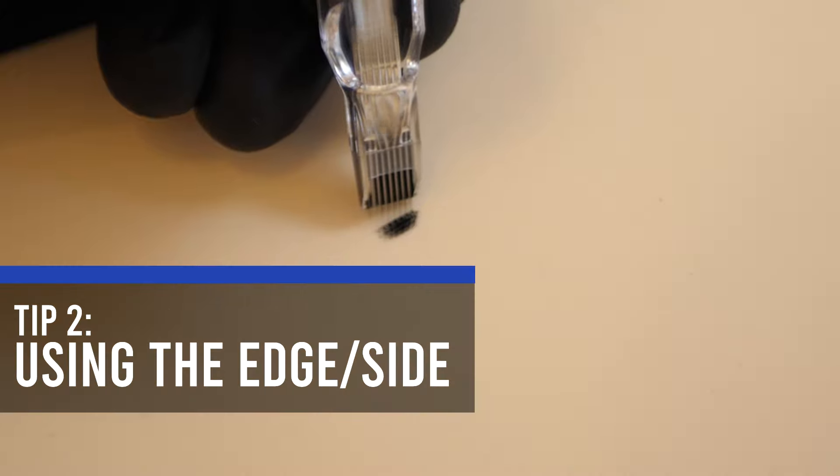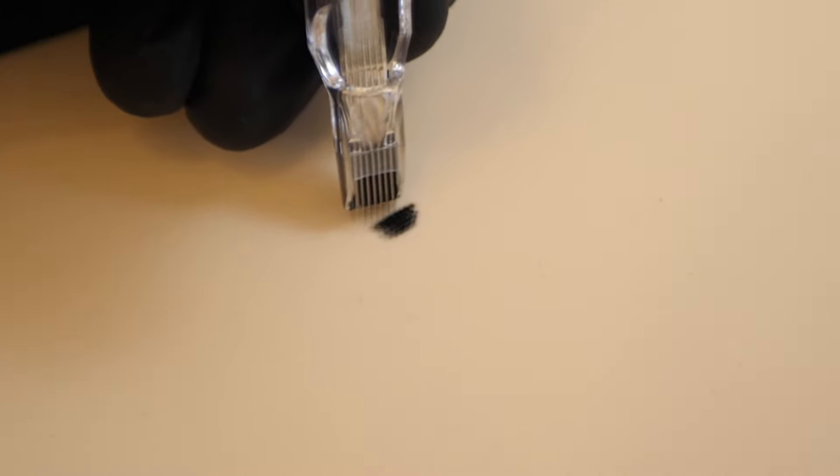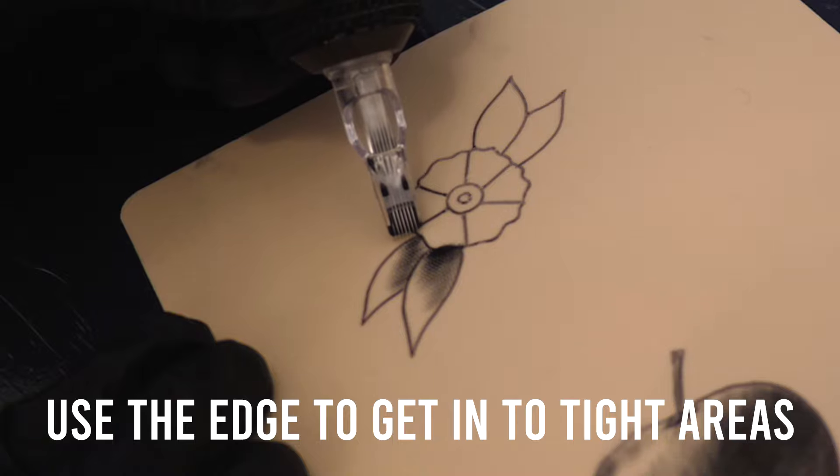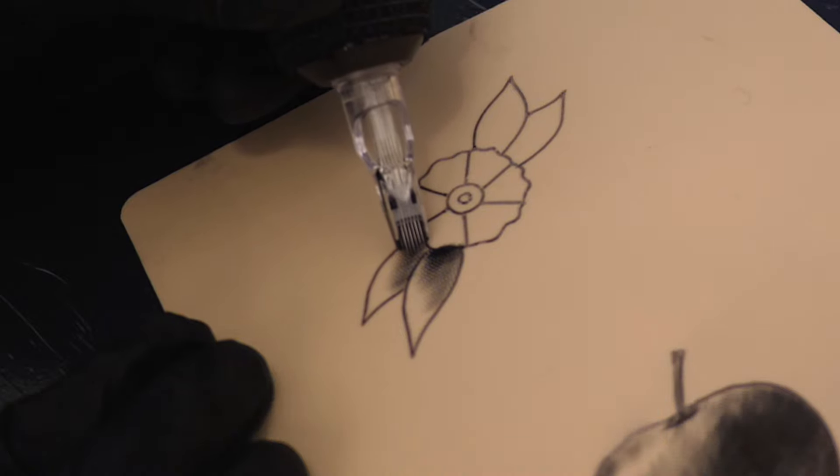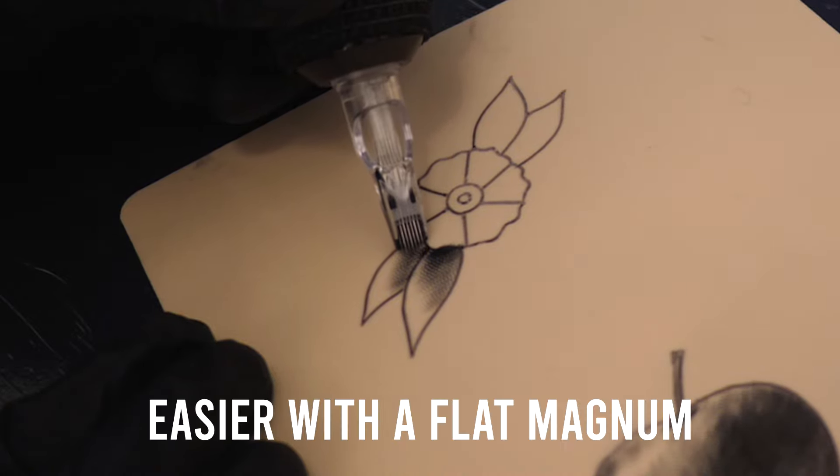So the next tip on this list is to use the edge of the magnum to get into the nooks and crannies of your tattoo design. So in this clip I am doing it with a curved magnum, but you can get even more precision if you're using a flat needle configuration.